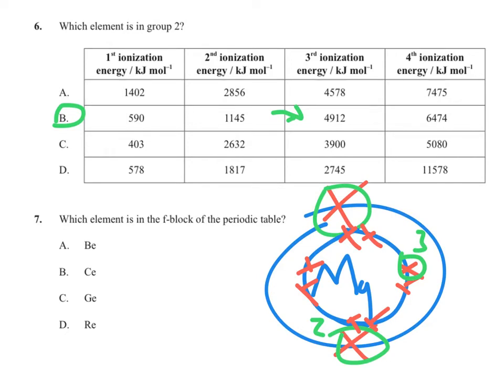If the question asked what element it is, there is a big jump after the 3rd ionization, suggesting that element is in group 3. For question 7, which element is in the F block — look on your periodic table and you will see which element is in the F block.